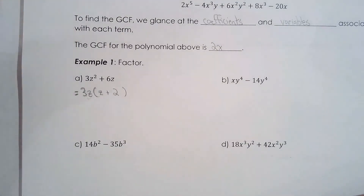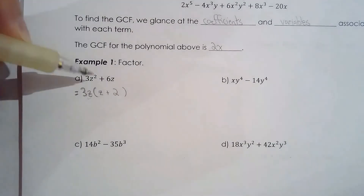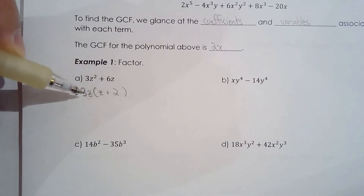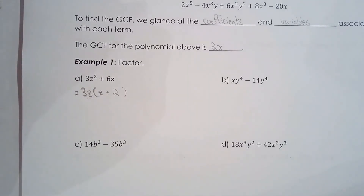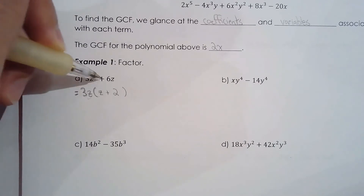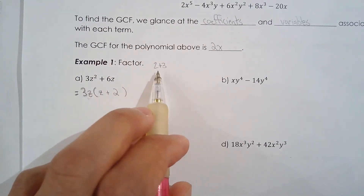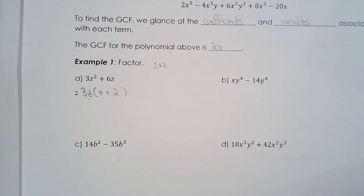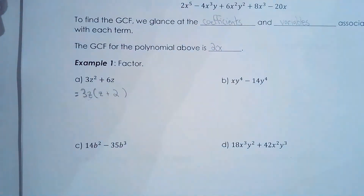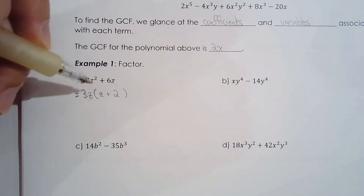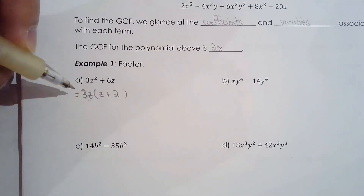We'll talk about why it's beneficial to factor in the quadratics unit. For now, understand: 3z squared plus 6z does not tell you what the factors are, but once you express it as 3z times (z + 2), now you know the factors. This equal sign is a huge idea in this unit — you're not changing the expression mathematically, just the way it looks, but they're identical.